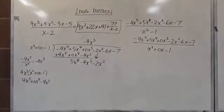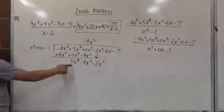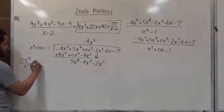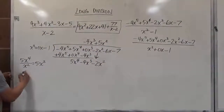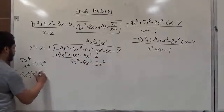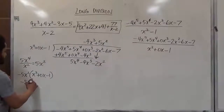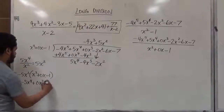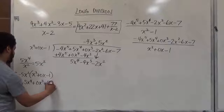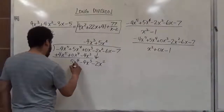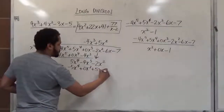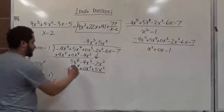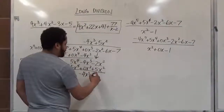We repeat the process. We take the head term 5x to the fourth and divide by x squared, giving us 5x squared as the quotient, so we put plus 5x squared up top. We take the opposite, negative 5x squared, and multiply by x squared plus 0x minus 1. This becomes negative 5x to the fourth, plus 0x to the third, plus 5x squared. The first two cancel, the second two give negative 4x cubed, and we have 3x squared.